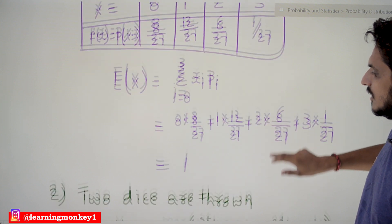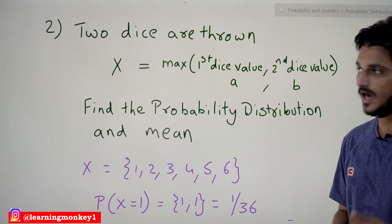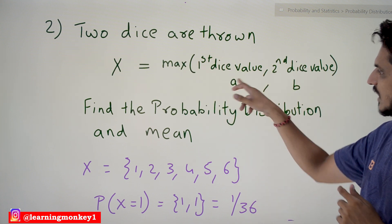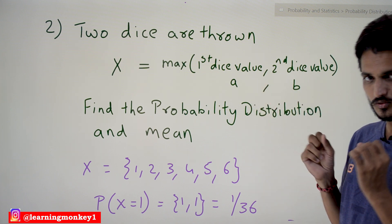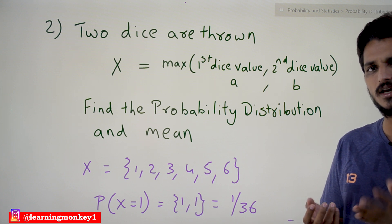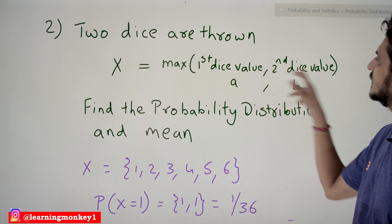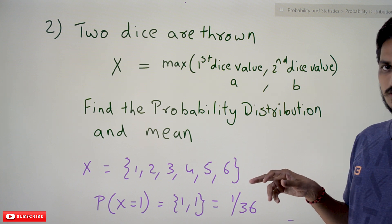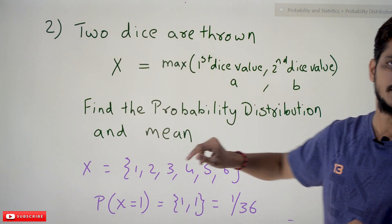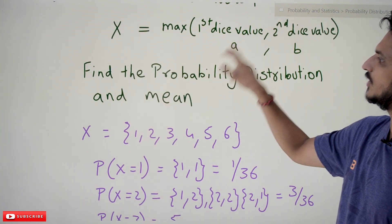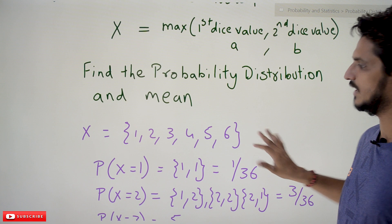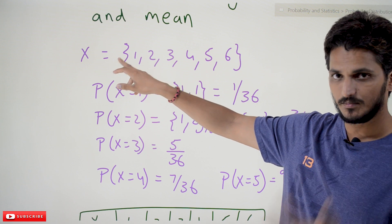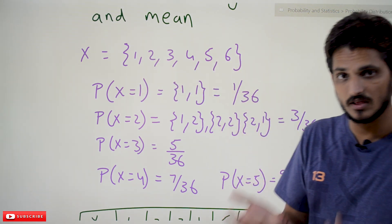Coming to the second example: two dice are thrown. The random variable X is defined as the maximum of the first die's value and the second die's value — written as max(a, b). The two dice can show values one through six, and we take whichever is the maximum. We need to find the probability distribution and mean. The random variable X can take values one, two, three, four, five, or six.